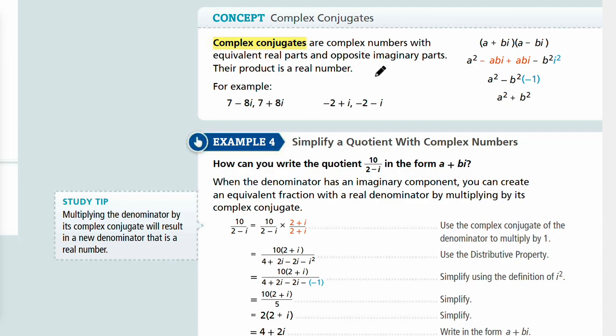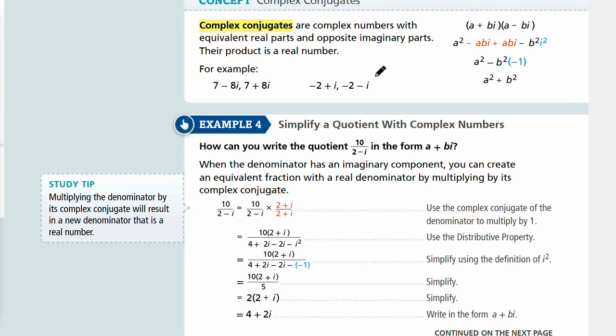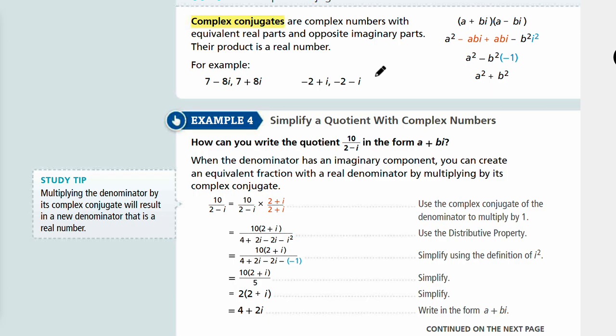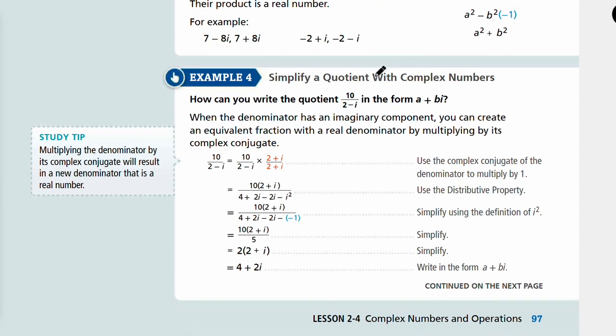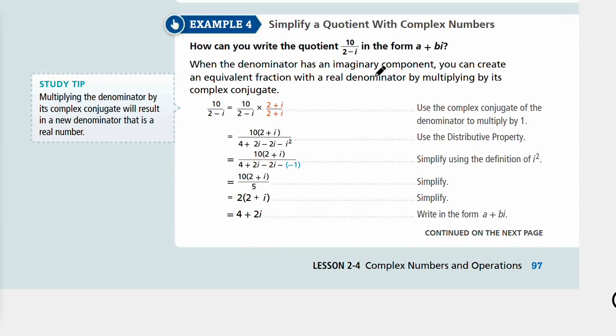Let's look at Example 4: Simplify a quotient with complex numbers. How can you write the quotient 10 over 2 minus i in the form a plus bi when the denominator has an imaginary component?